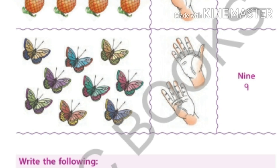Now how many butterflies are here? One, two, three, four, five, six, seven, eight, nine. Nine. And nine fingers. The spelling is N-I-N-E. Nine.